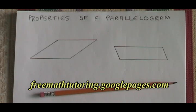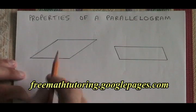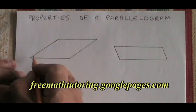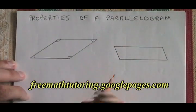The properties of a parallelogram are as follows. A parallelogram is a quadrilateral, so the four angles inside it have to add up to 360 degrees.